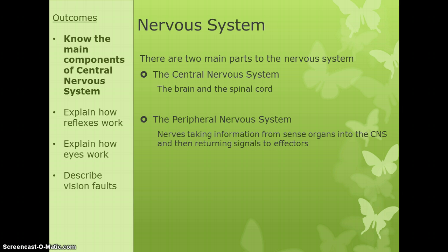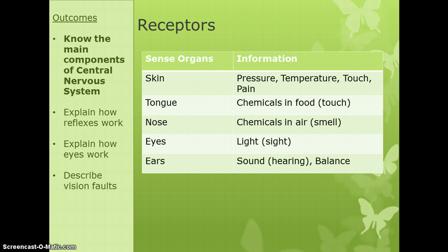Effectors are often things like muscles — things that cause change. Your receptors are your sense organs, the parts of your body where you take in stimuli. Your skin detects pressure, temperature, and pain — touch stimuli. Your tongue takes in chemicals in food for taste, your nose detects chemicals in the air for smell, your eyes take in light for sight, and your ears take in sound for hearing, as well as sensing balance via fluid inside them.